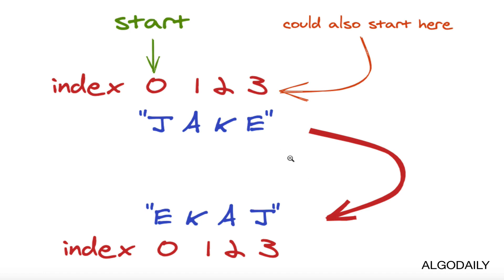If you think of a string as an array containing elements that are one character each - so J is an element, A is an element, K is an element, and E is an element - and if each of these are array items, then we know that with an array, we can loop forwards. We can start at index zero and iterate through each element of the array.